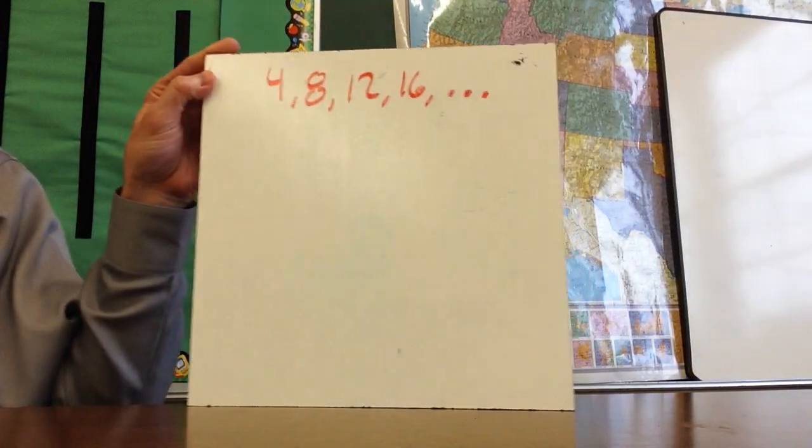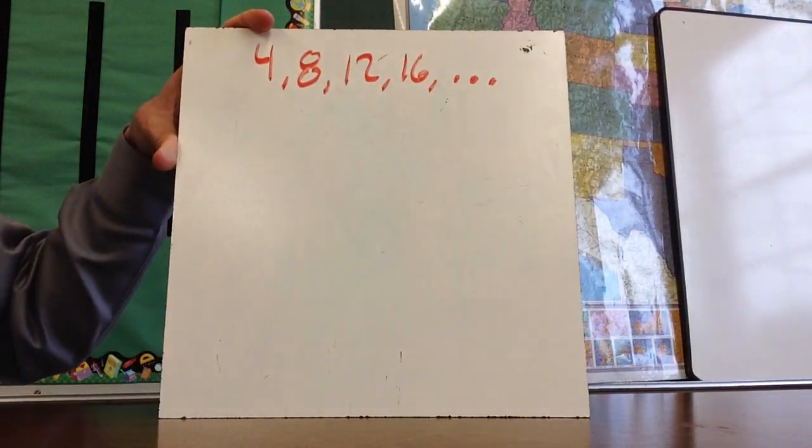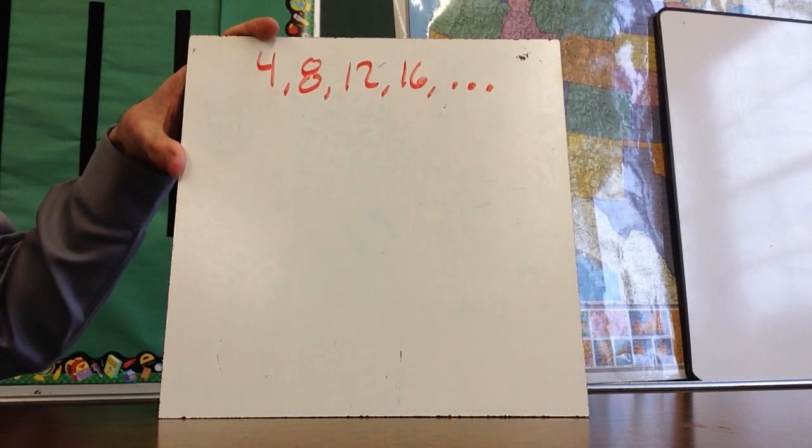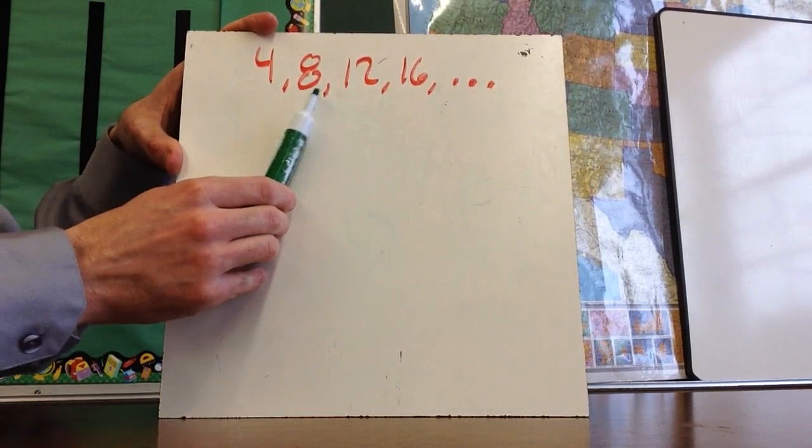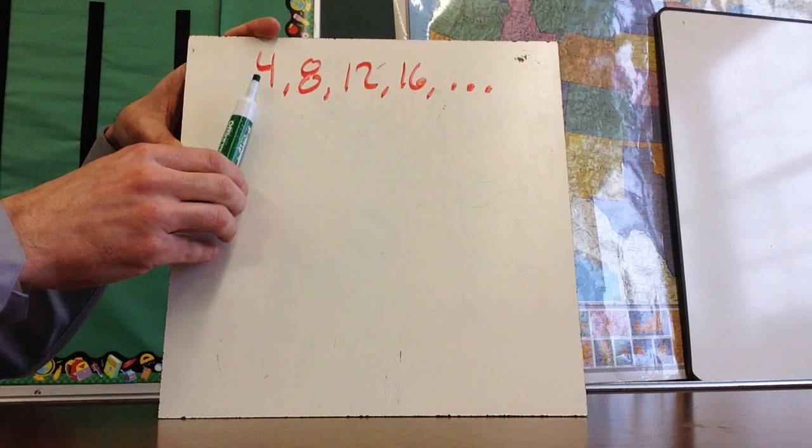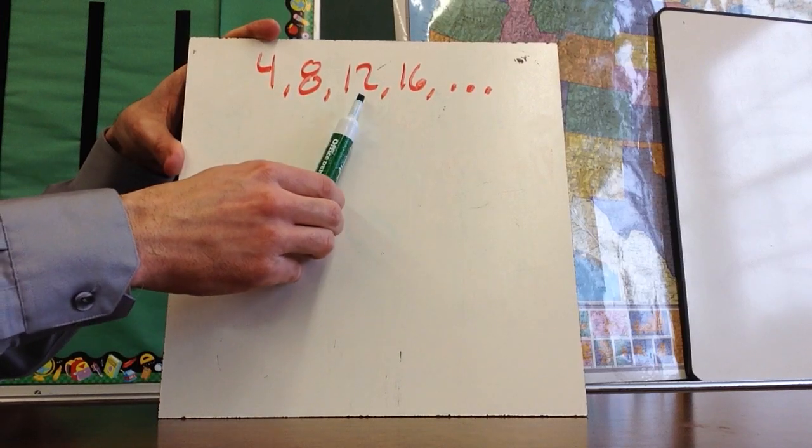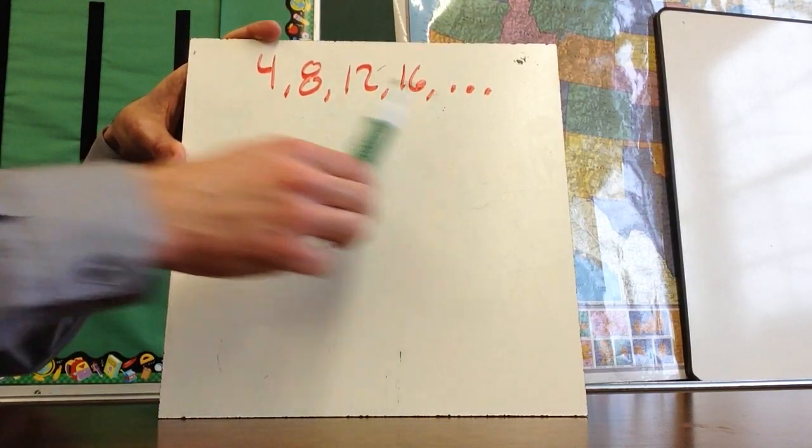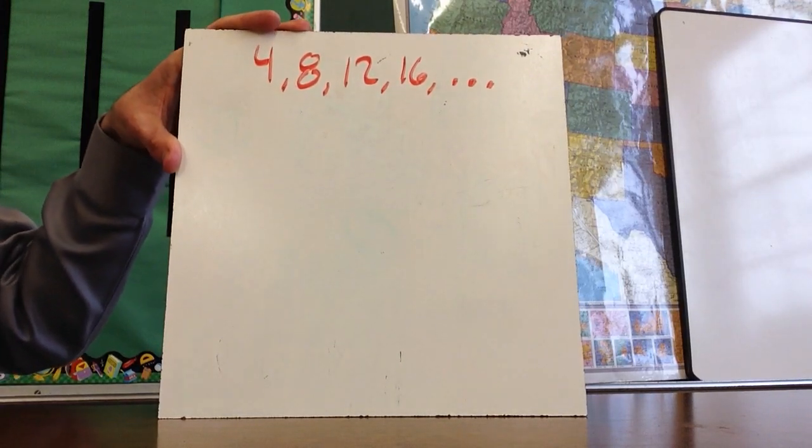The first thing I want to talk about is a little bit of vocabulary as you're looking at a sequence. So this would be a possible sequence, and each of these numbers is called a term. So this would be the first term, the second term, the third term, the fourth term, and then obviously the next one would be the fifth term.